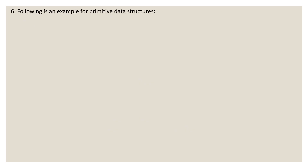Question 6: which of the following is an example of a primitive data structure? A data structure directly operated upon by machine level instructions is called a primitive data structure; examples include int, float, char, double, pointer, and references. Options: A) tree, B) stack, C) queue, D) int. The correct answer is option D: int, because int is an example of a primitive data structure.